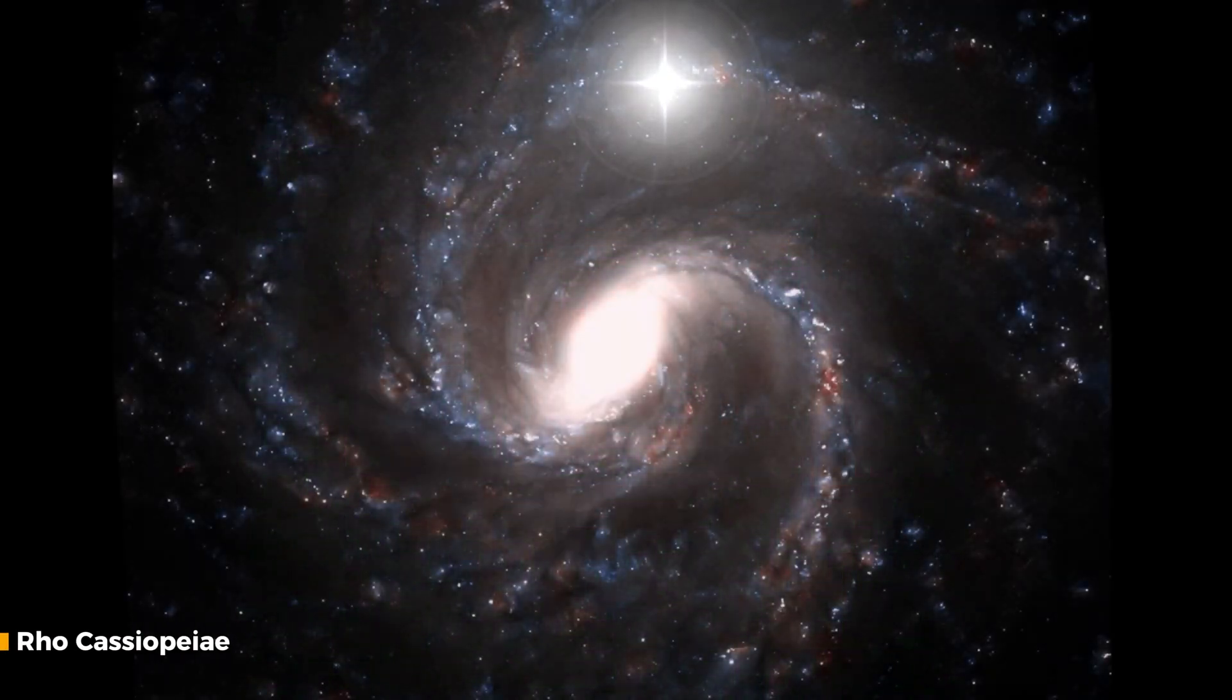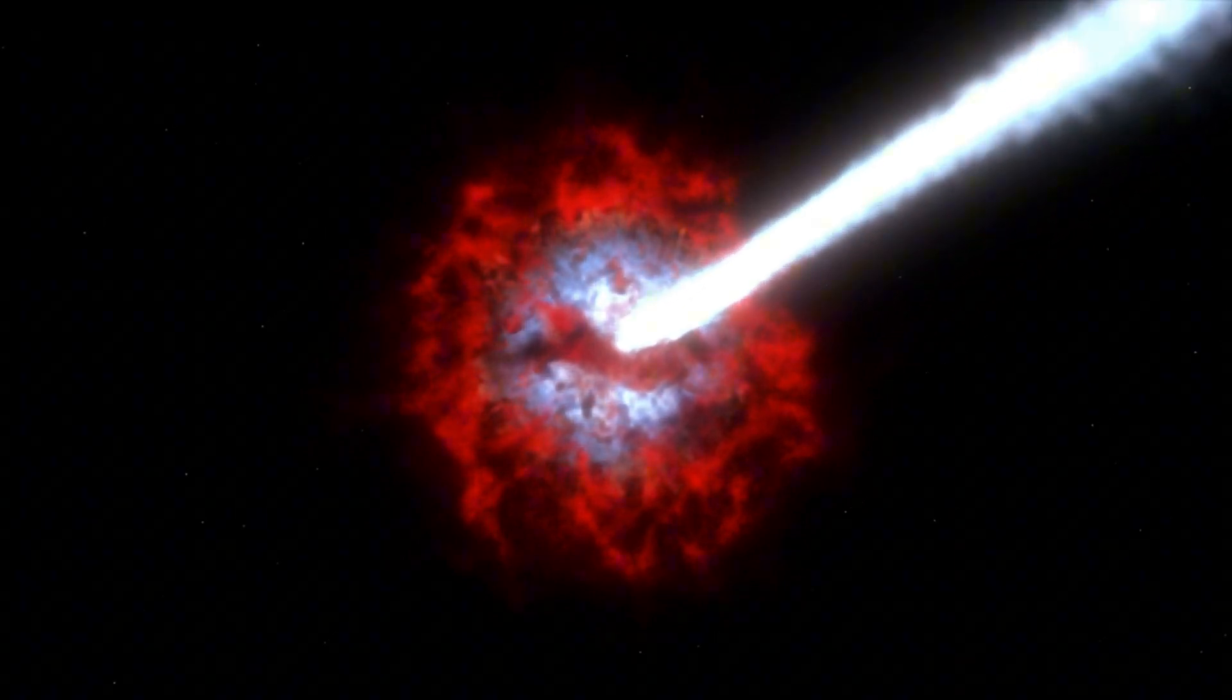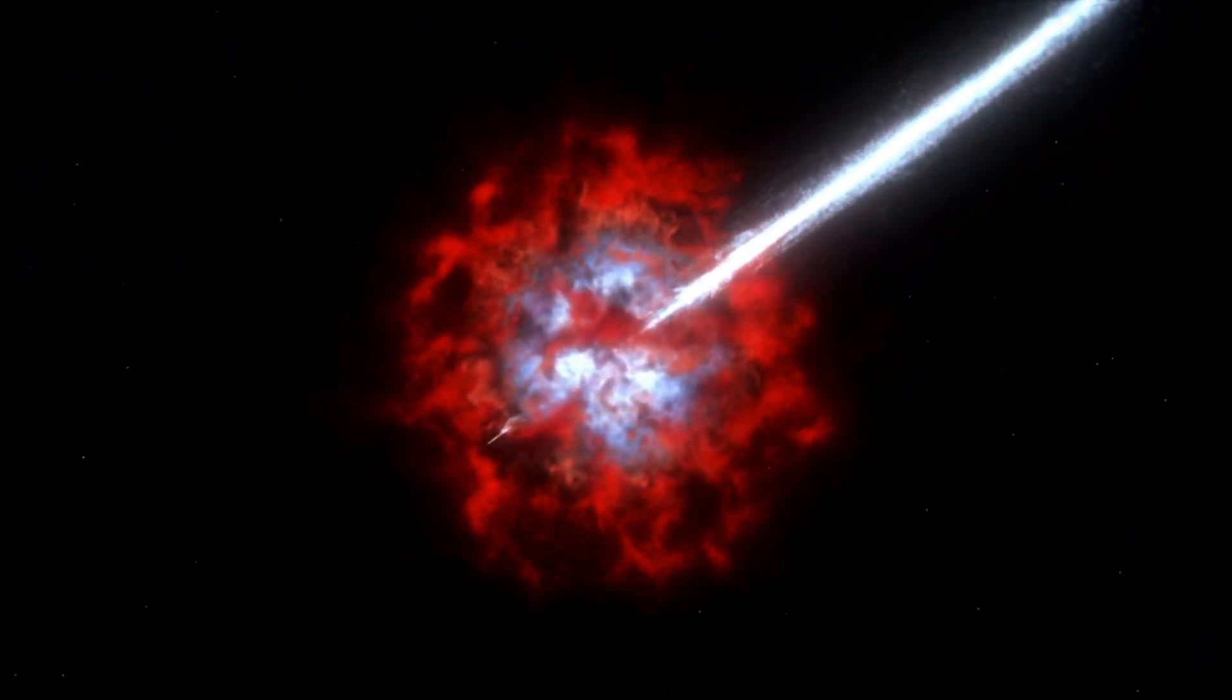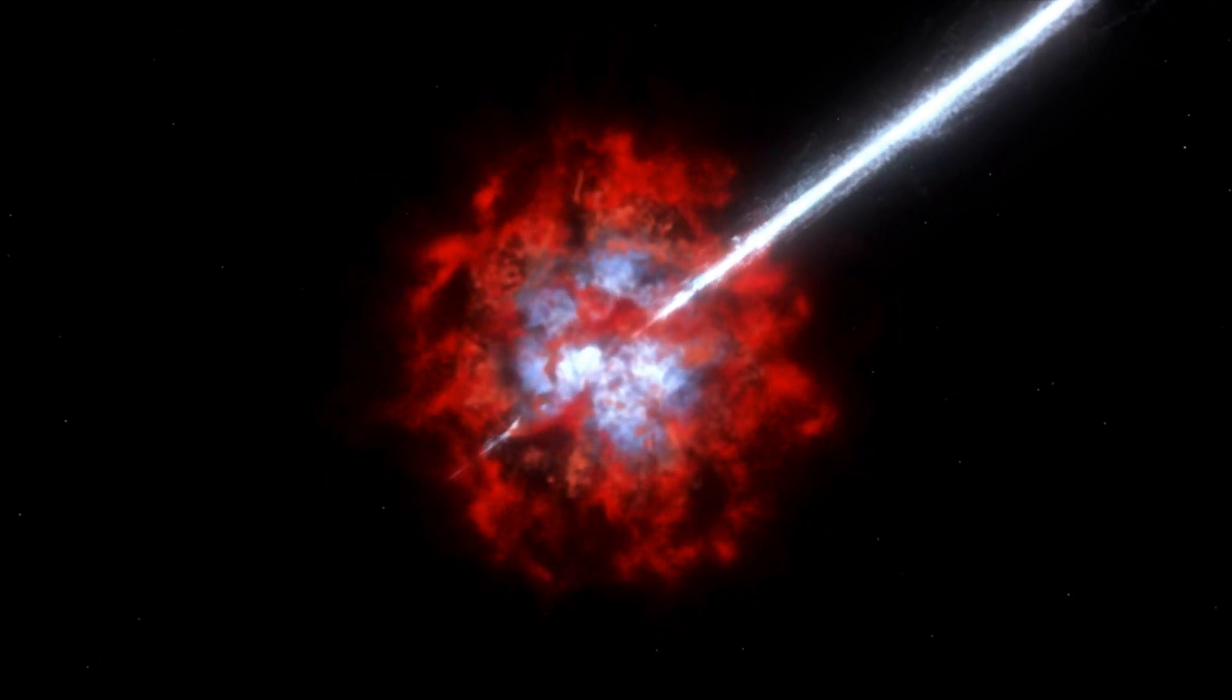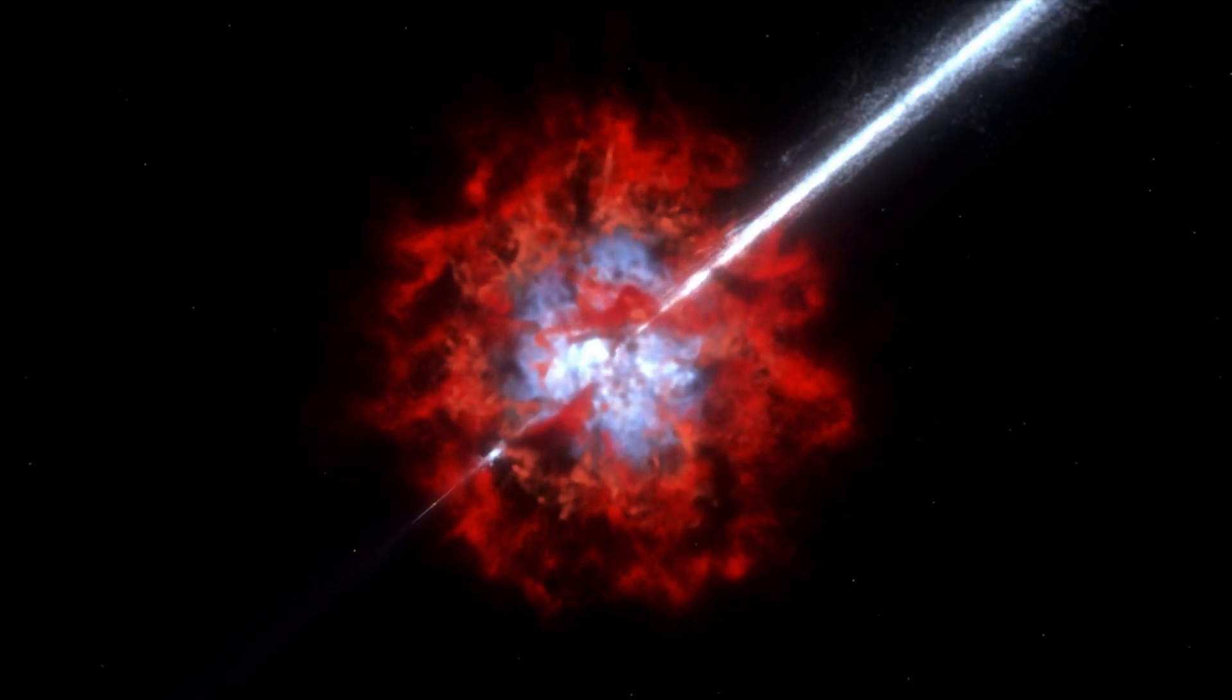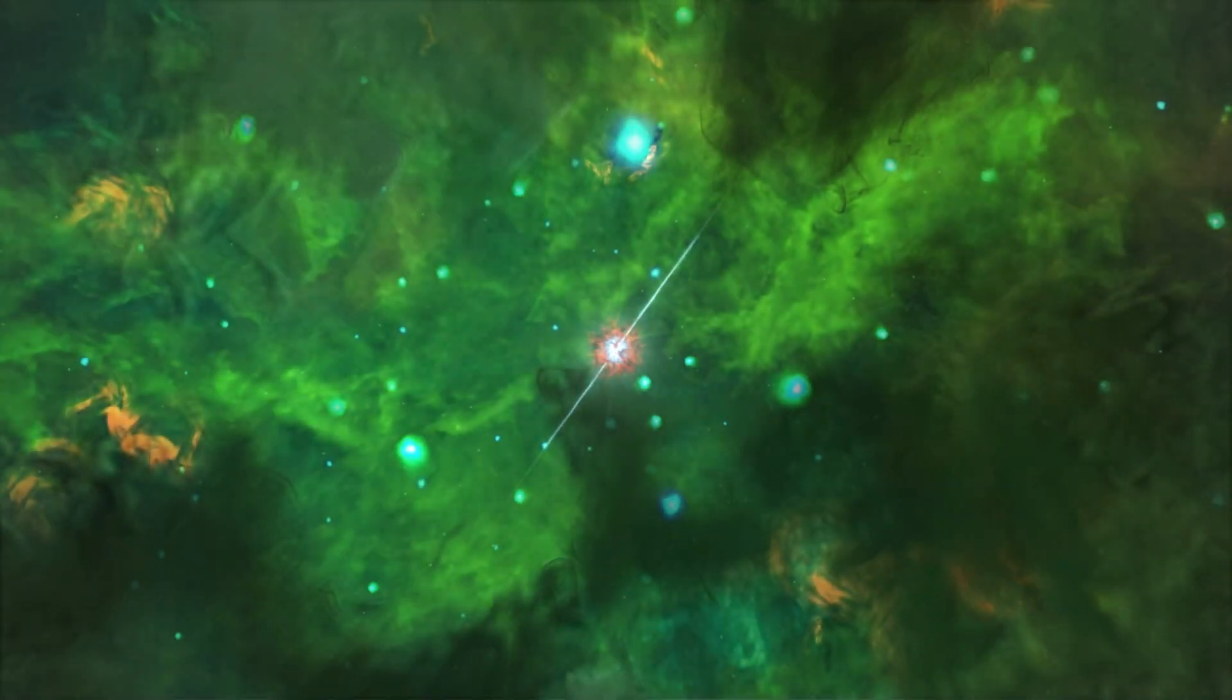Next is the yellow hypergiant, Ro Cassiopeia, in the constellation Cassiopeia. It is about 3,400 light-years from Earth, but can still be seen with the naked eye as it is over 300,000 times brighter than the sun. Yellow hypergiants are one of the rarest categories of stars. Only 12 stars of this type are known from our galaxy.